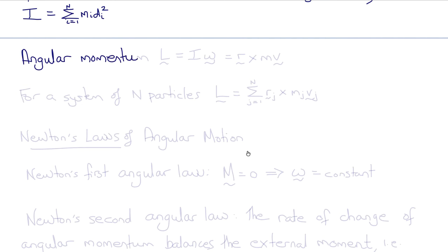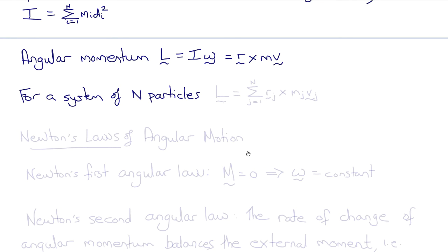Angular momentum, by analogy with linear momentum — which is mass times velocity — is I times angular velocity and is labeled L. Like linear momentum, it is a vector that can also be expressed as the cross product of R times the linear momentum mV. So for a system of N particles, the angular momentum L is the sum from j equals one to N of Rⱼ crossed with the linear momentum of each particle, mⱼvⱼ.